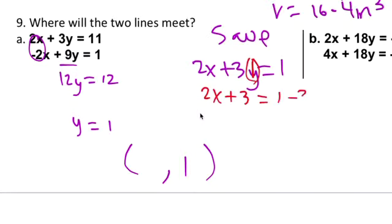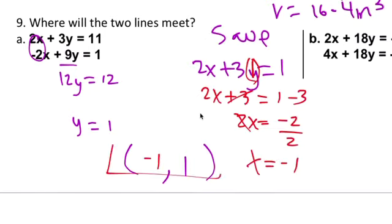So you put in one right here. So that is 2x plus three equals to one. So you minus three to both sides. You get 2x equals negative two. And then you divide by two. You get x equals to negative one. So your solution is the two lines will meet here at negative one, one.